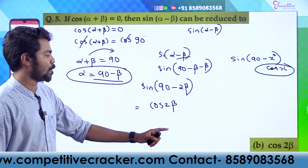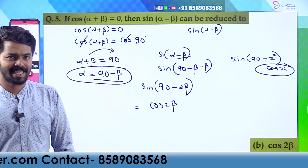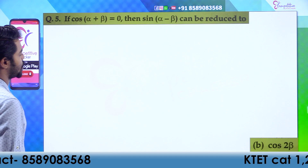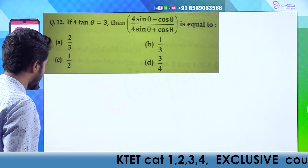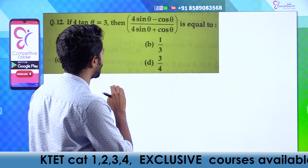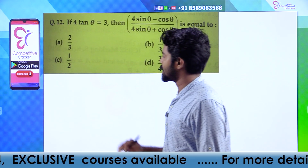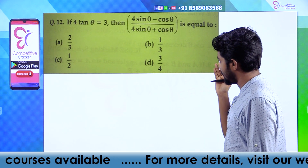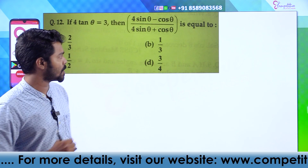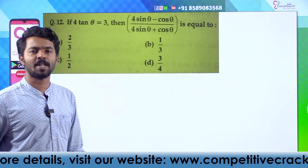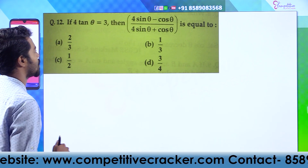Next question: if 4 tan θ equals 3, then (4 sin θ - cos θ) divided by (4 sin θ + cos θ) equals what? Option A: 2/3, Option B: 1/3, Option C: 1/2, Option D: 3/4. It is very easy to do.